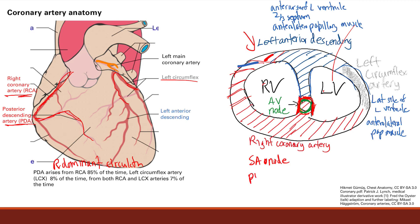It also supplies the posterior medial papillary muscle — all from the posterior descending artery. So the posterior medial papillary muscle's only blood supply is from the posterior descending artery.